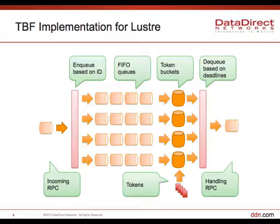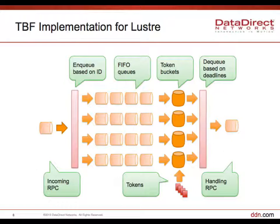We create many queues based on the ID. To control which RPC goes out, each queue has a deadline. A deadline scheduler selects which RPC to pop from the queue and send out.